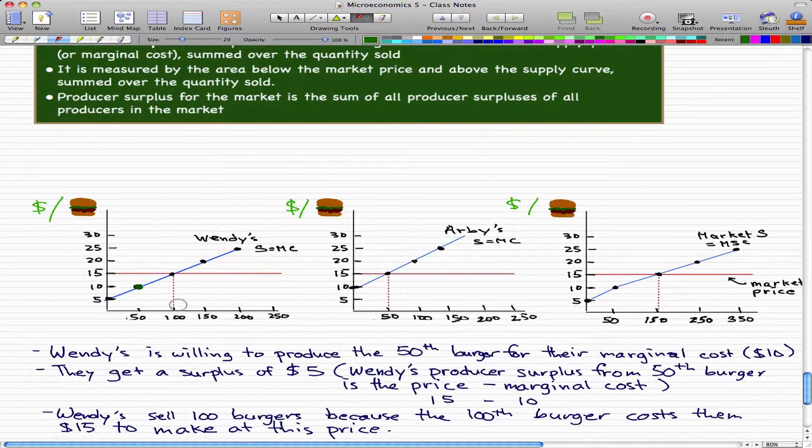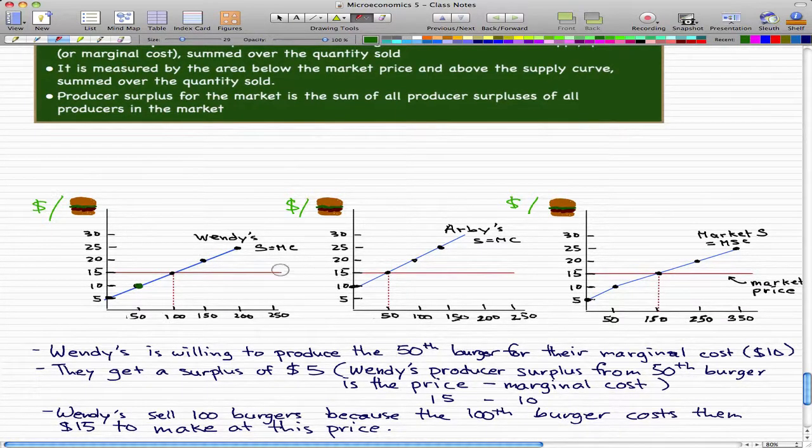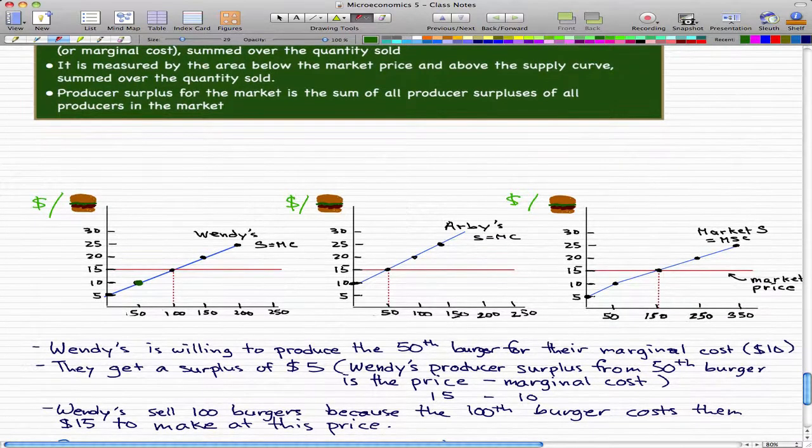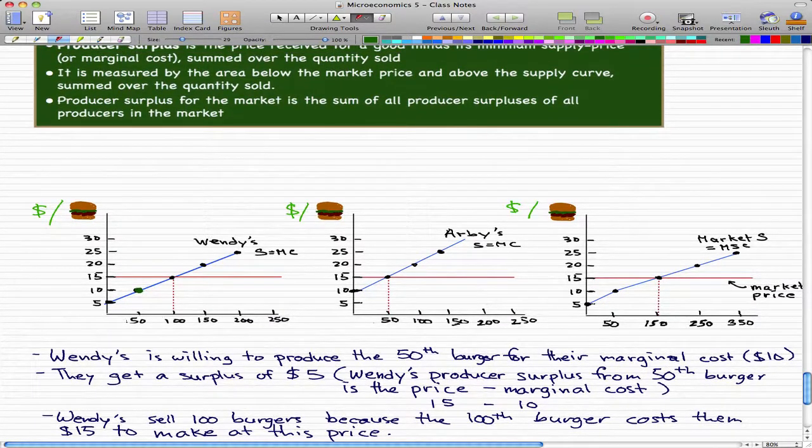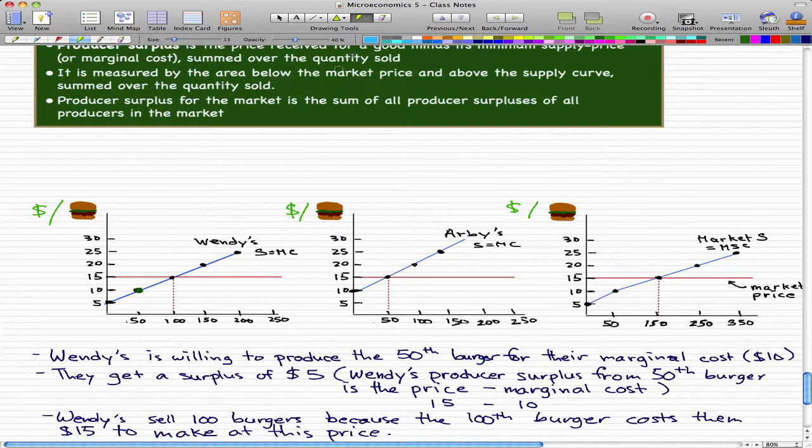Now, Wendy's is actually interested in making 100 burgers because the 100th burger costs them only $15 to make at this price, which is equal to the market price. So they'll be like probably breaking even at that point. But that's not what I really want to focus on. What I really want to focus on is producer surplus.